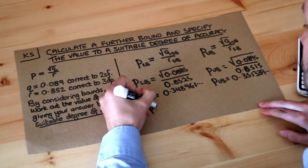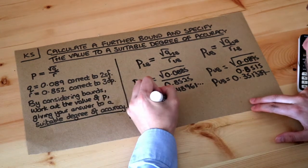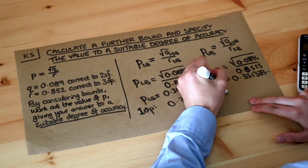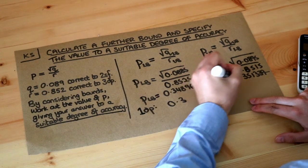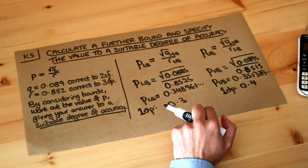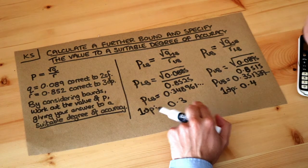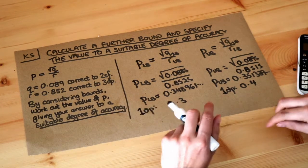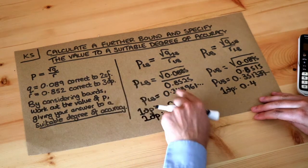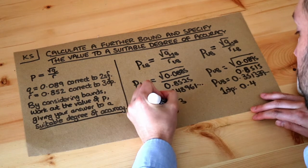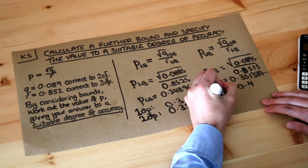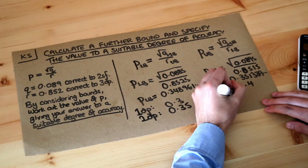We round to more and more accuracy until the two values agree. At one decimal place: the lower bound rounds to 0.3 and the upper bound rounds to 0.4 — these are not the same, so we shouldn't round to one decimal place. At two decimal places: the lower bound rounds to 0.35 and the upper bound also rounds to 0.35.